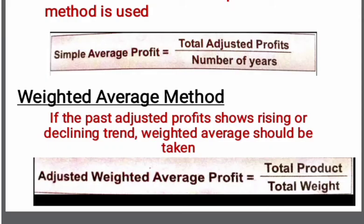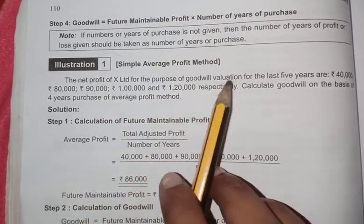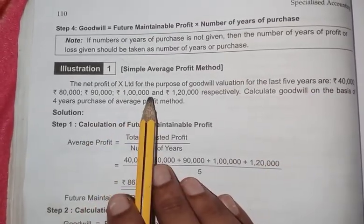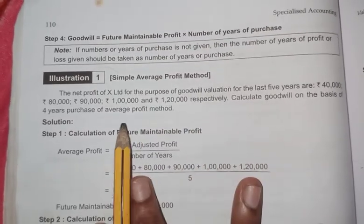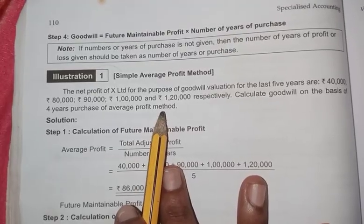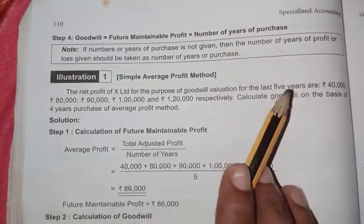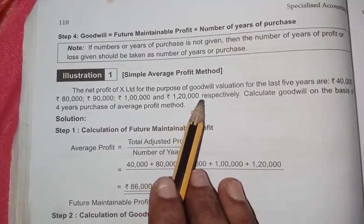The net profit of X-Limited for the purpose of Goodwill valuation for the first five years are $40,000, $80,000, $90,000, and $1,20,000 respectively. Calculate Goodwill on the basis of four years purchase of average profit method.